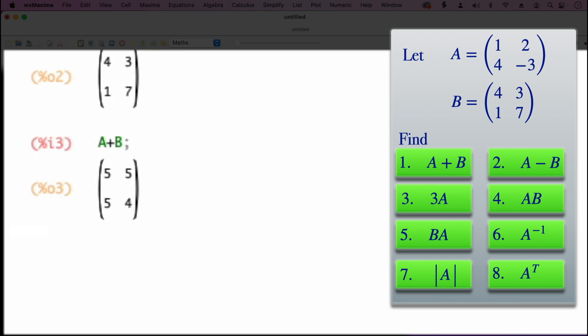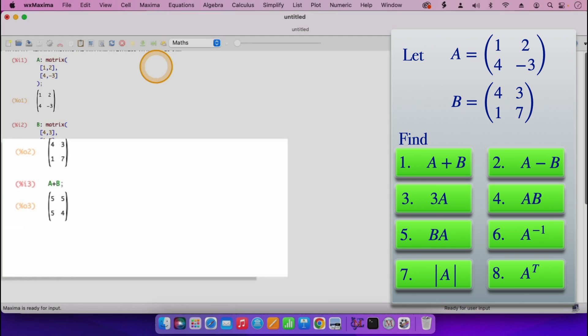We have that A plus B equals five five, five four. If you still remember, for matrix addition, we will be adding the corresponding elements.